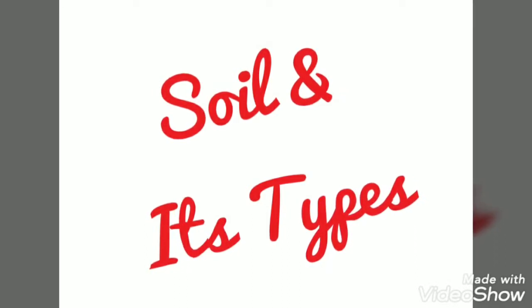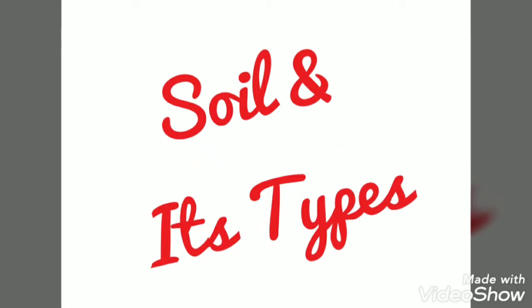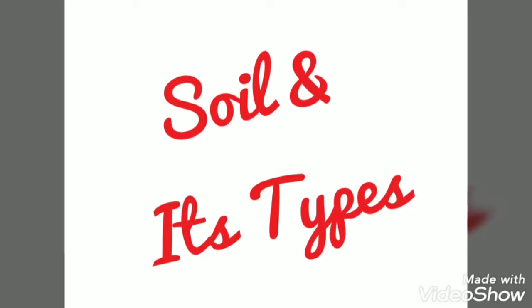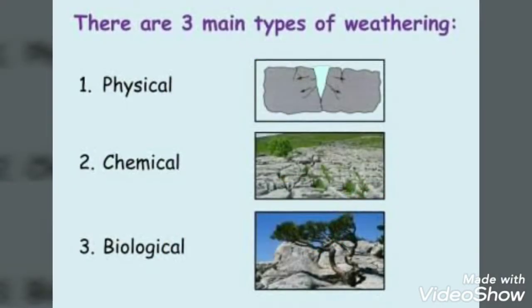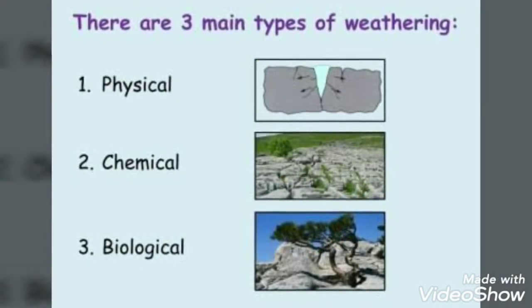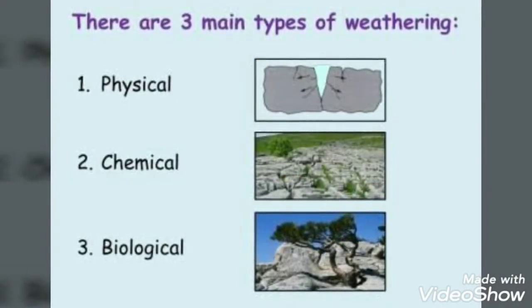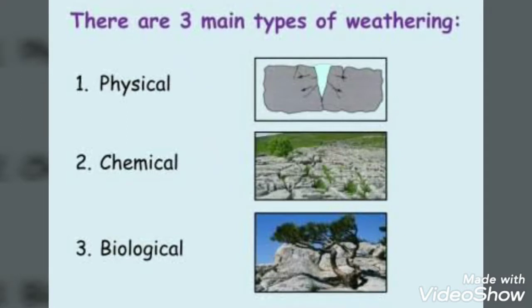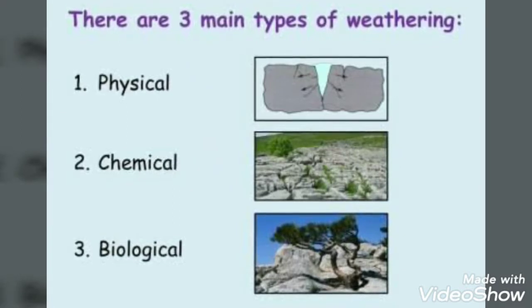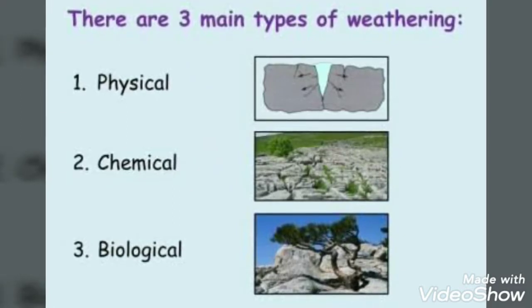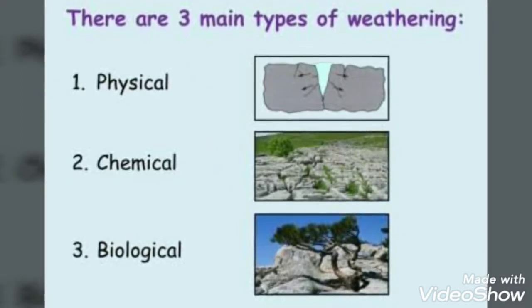Before starting, let us see what you actually mean by weathering. Weathering is a process where rocks are worn away or broken down into smaller pieces by wind, water, or plants. It happens very slowly over a long period of time.